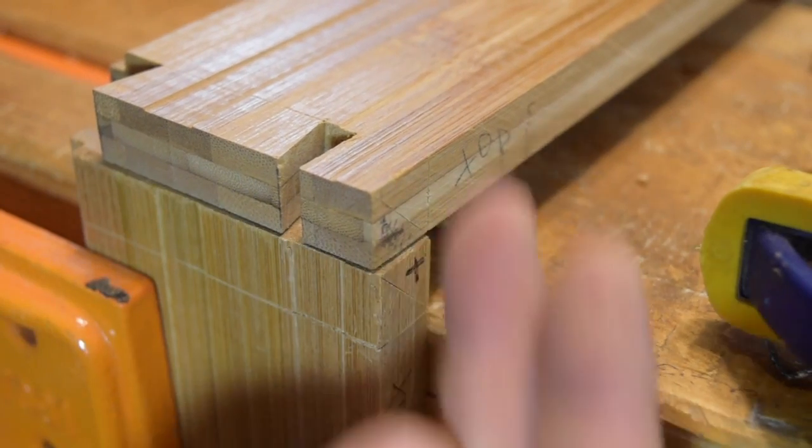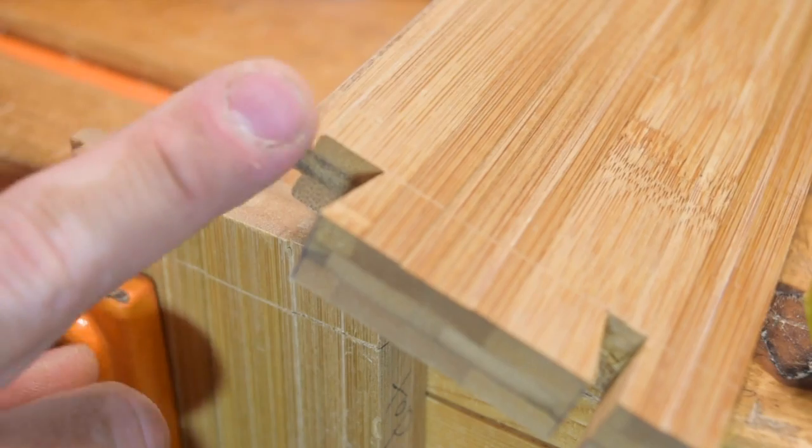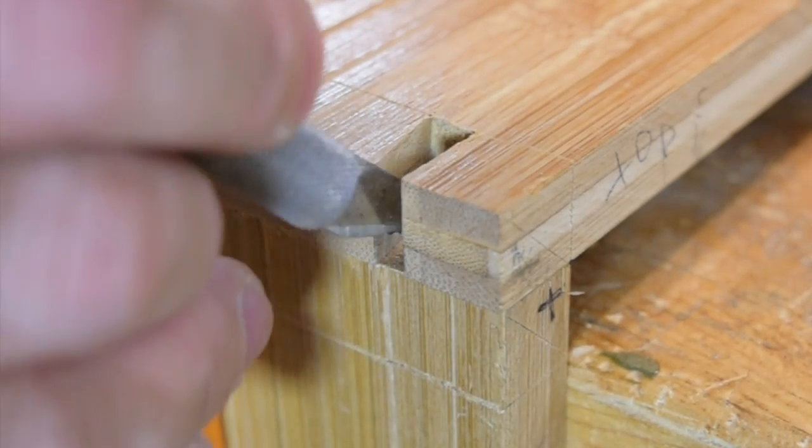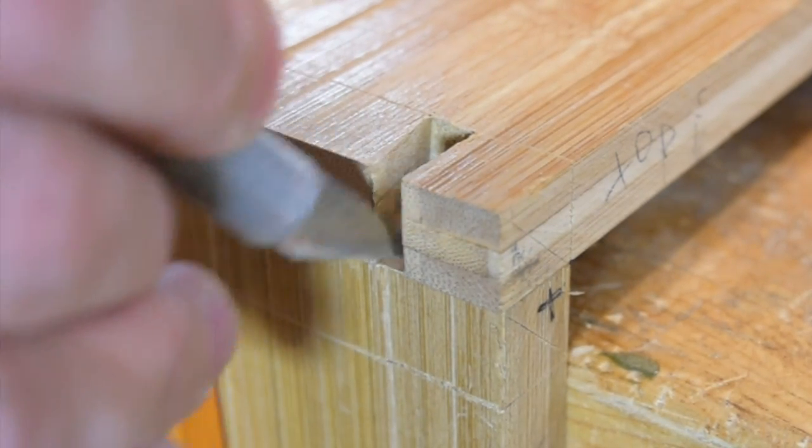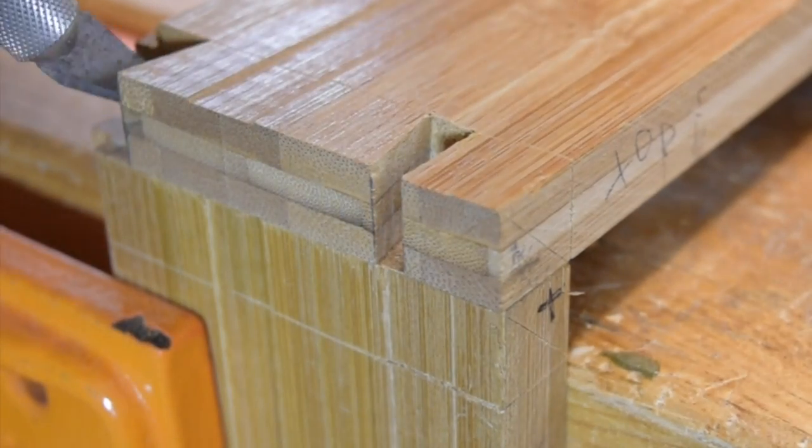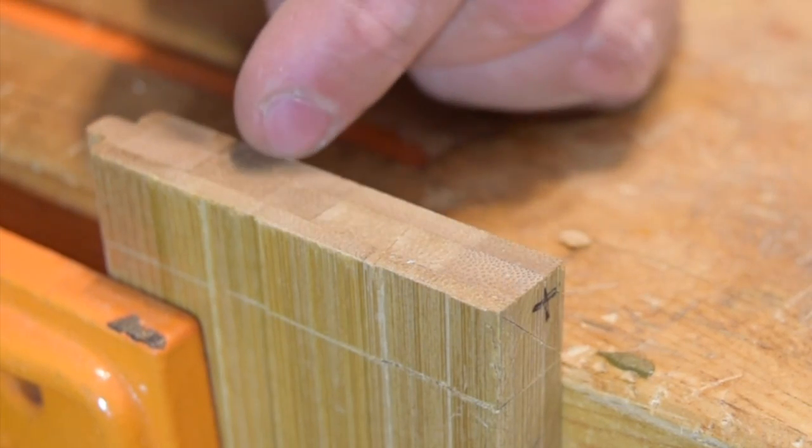I'm going to use the top two ends here as a reference face because on the other end I have this tongue which makes it difficult to align. Once I have it aligned, I'm just going to mark these out with my knife. Bamboo is difficult to mark, so I'm going to go over these lines with my chisel real quick.